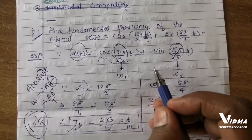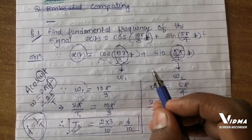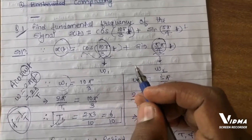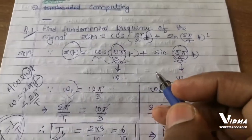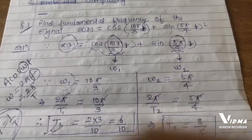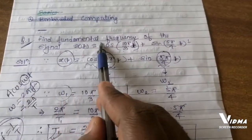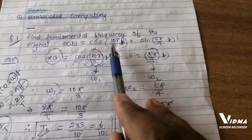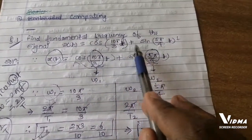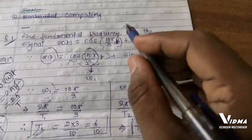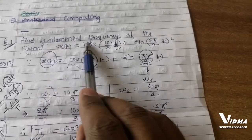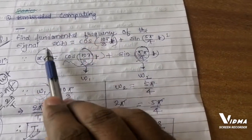Good morning everyone. Today we are going to discuss our first question bank. Under that question bank I have taken many numericals. For example, the first numerical is: find the fundamental frequency of the signal x(t) = cos(10πt/3) + sin(5πt/4). We have to find the fundamental frequency of this particular signal.